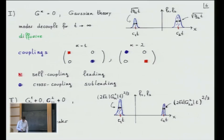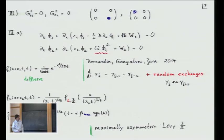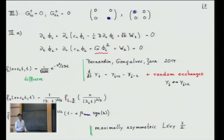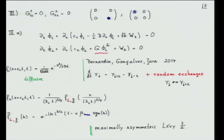Now let's come to a few cases that are more accessible to proofs. Let me assume that the two self-coupling terms are actually zero — this might happen because of some symmetry in the system. Let me first look at the case where I only keep one term: phi_1 satisfies an equation by itself, but for phi_2 I put phi_1 squared. The question is what happens in this case.